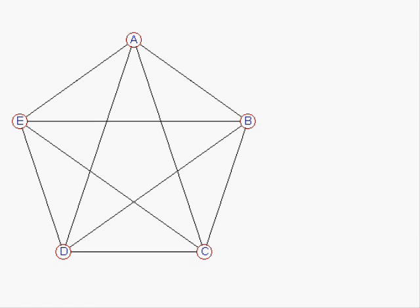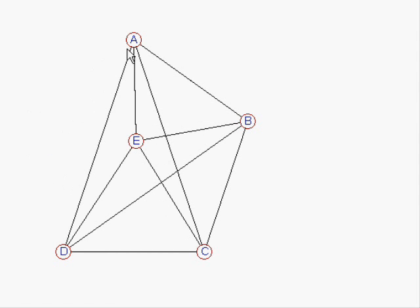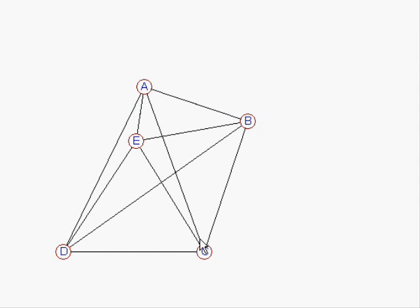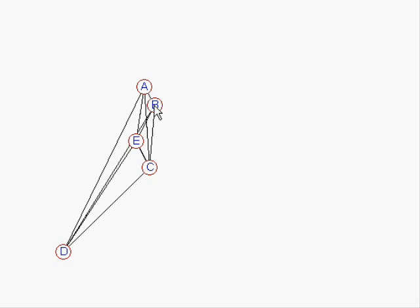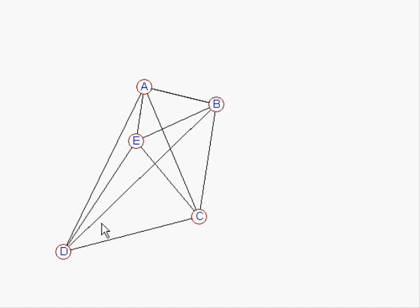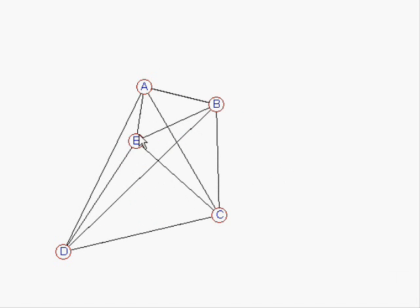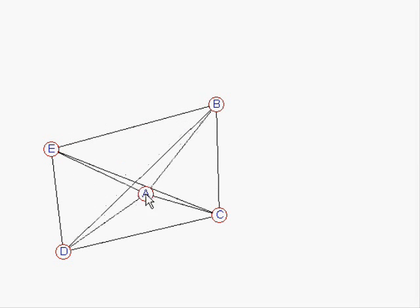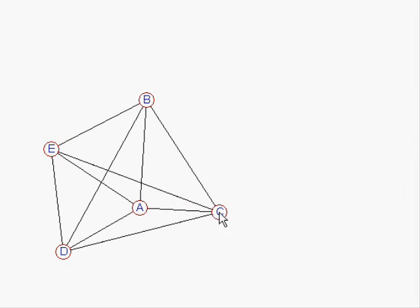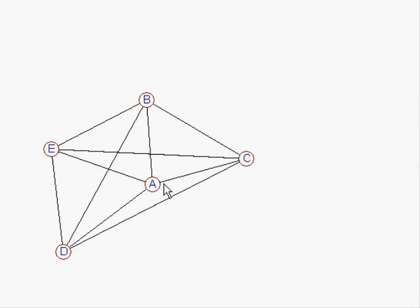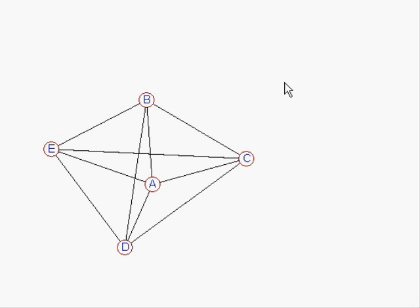This is the next complete graph, the one with five nodes. Let's see if we can draw that in the plane. Well, let's start dragging some of the nodes and see if we can get rid of all those overlaps. Well, it's not having much success so far. Move E out, move A into the middle. No, we're still getting overlaps whatever we do. In fact, it is known that it is impossible to draw K5 in the plane.